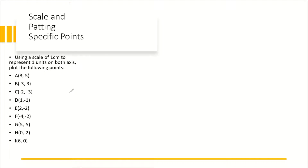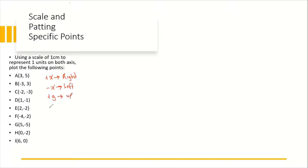Before we can plot points, there is something you need to remember. If you have a positive x coordinate, this suggests that you are going to make a horizontal movement to the right. If you have a negative x coordinate, this suggests that you are going to make a horizontal movement to the left. If you have a positive y coordinate, this suggests that you are going to make a vertical movement up. And if you have a negative y component, this suggests that you are going to make a vertical movement down.